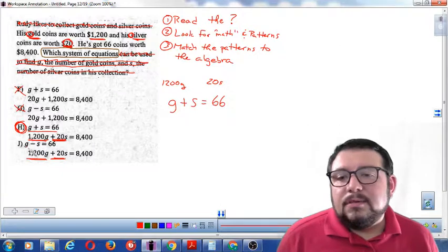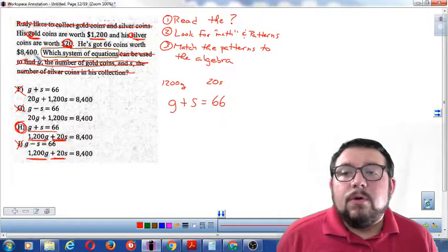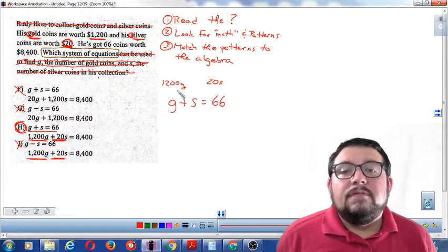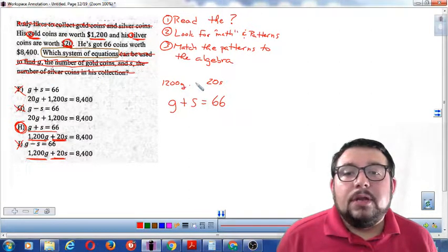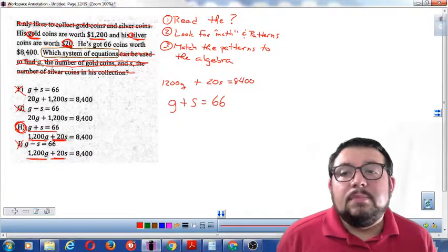So right away, I think this is my answer. But G minus S equals 66. That doesn't even make sense. And then finally, it says that they're worth $8,400. Well, if I add up the $1,200 for each coin and the $20 for each silver coin, I get $8,400. That's the pattern.